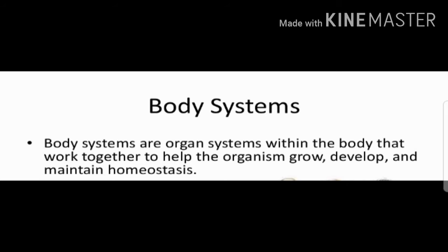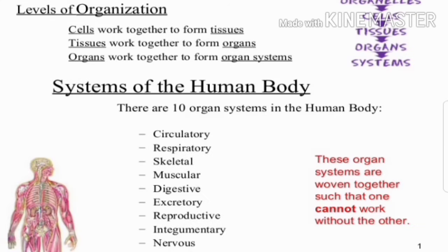There are levels of organization in our body. First come the cells. Cells work together to form tissues. Tissues are groups of cells having the same structure and size. Tissues work together to form organs, and organs work together to form organ systems. In our body there are many different organ systems.